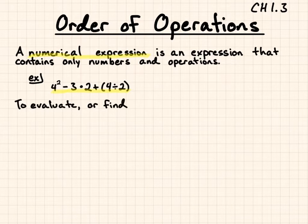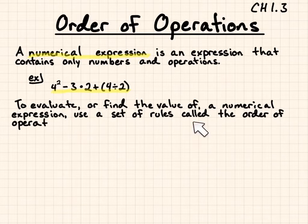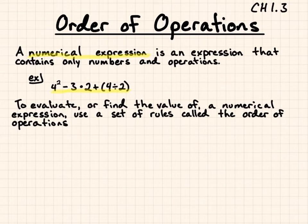To evaluate or find the value of a numerical expression, we all use the same way of finding it — a set of rules called the order of operations. If you don't follow this set of rules, it's not the same one that everybody else uses. This is how we agree to evaluate a numerical expression.